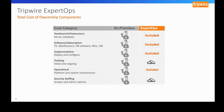ExpertOps provides a lower total cost of ownership because components that would result in additional costs to customers are already included. These costs include hard costs like hardware, infrastructure, support, and maintenance, as well as other costs like training, operational costs, and the costs associated with hiring, retaining, and turnover of skilled staff. With ExpertOps, you don't have to worry about any of these costs, as they're covered by the simple annual subscription price.